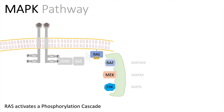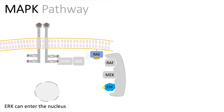One of these proteins will phosphorylate the other one downstream. RAF gets activated first, RAF then phosphorylates MEK, and MEK phosphorylates ERK — and that activates ERK.